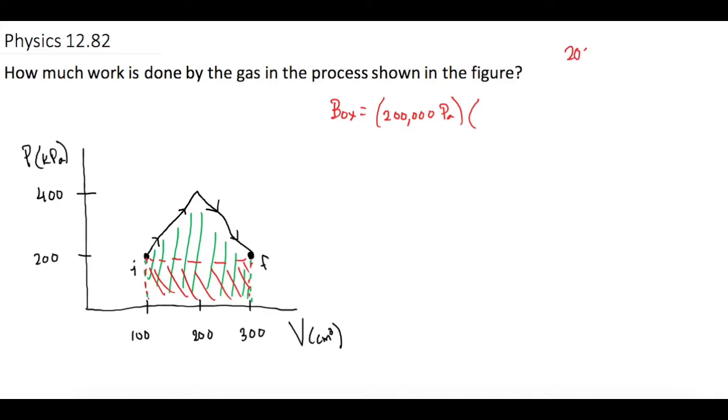If we have 200, we move the decimal place over 6 places: 1, 2, 3, 4, 5, 6, so we have 0.0002 cubic meters. When we plug that in, we get 40 joules.